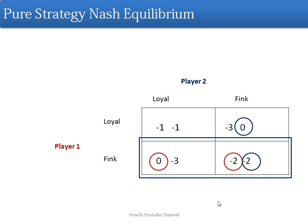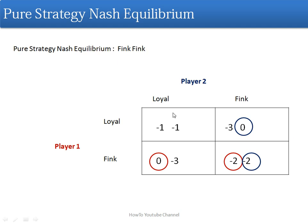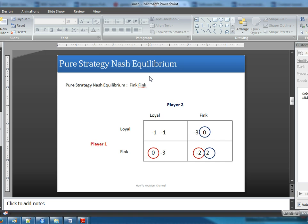So this is our final stage. We have selected these best strategies. Now what you have to do is select the cell where you have encircled both values. Here you can see we circled both values — this is the pure strategy Nash equilibrium. This strategy, which is fink-fink, is known as the pure strategy Nash equilibrium. Thank you very much for watching.